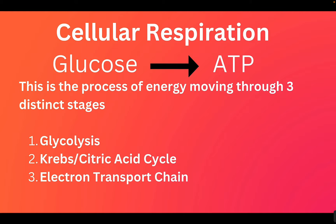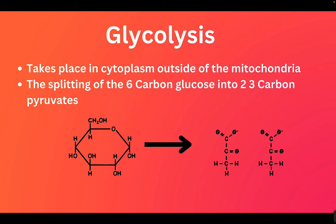We will start with stage one: glycolysis. Cellular respiration is known to take place in an organelle called the mitochondria. However, this first step takes place outside of the mitochondria, in the cytoplasm — the cell goo environment outside of the mitochondria. Glycolysis is the splitting of that six-carbon glucose into two three-carbon pyruvates. Those two structures you see on screen at the end of the reaction are pyruvates — we're splitting glucose in half.